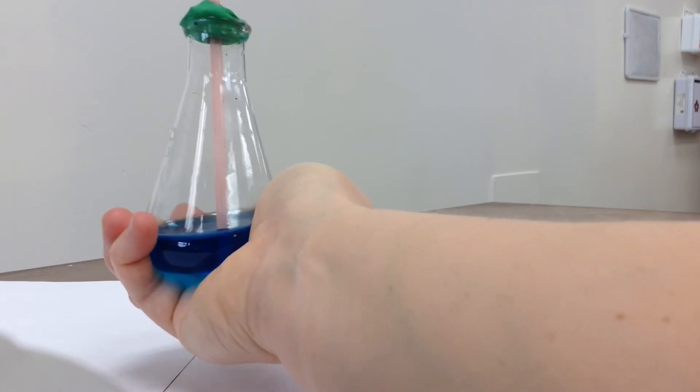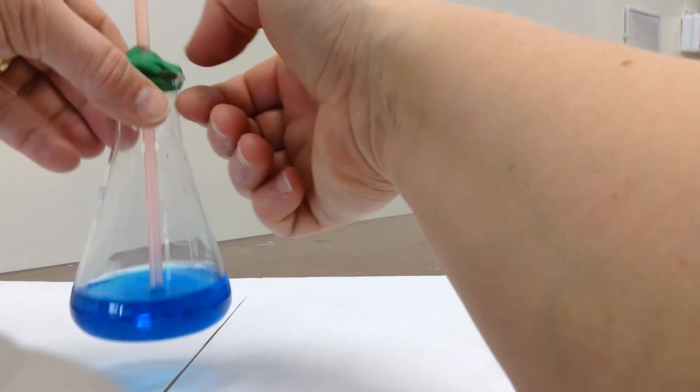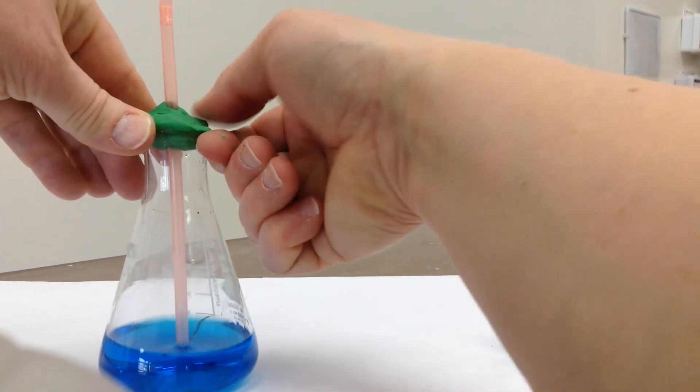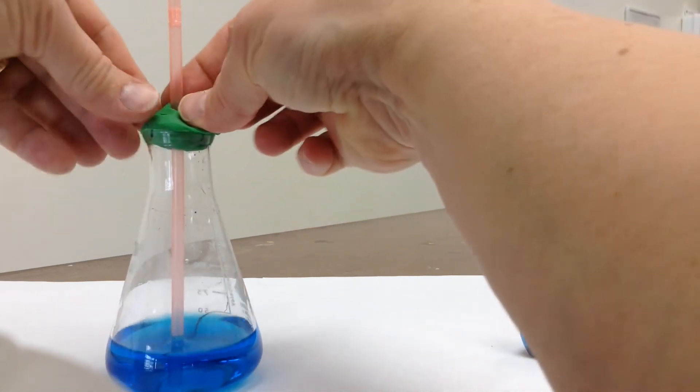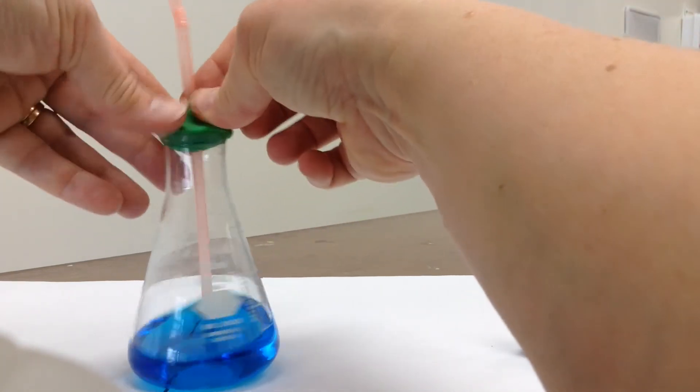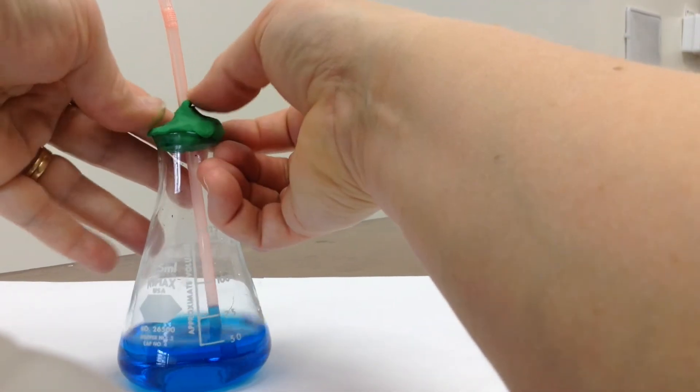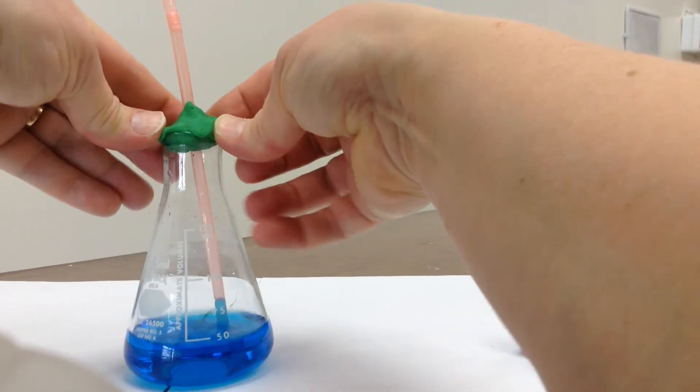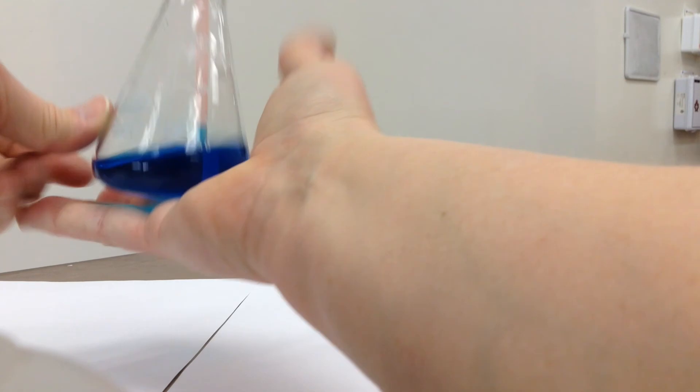Now that one's not quite working yet, so we'll check to make sure we have an airtight seal. And it might take a few tries, squishing around your straw, make sure no air can get through. And we'll try again.